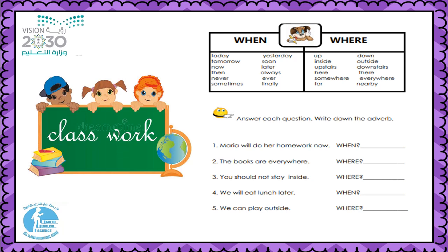Number four: 'We will eat lunch later.' When will we eat lunch? Later. Later is the adverb — circle it and write it on the line. Number five: 'We can play outside.' Where can we play? Outside. Outside is the adverb — circle it and write it on the line.